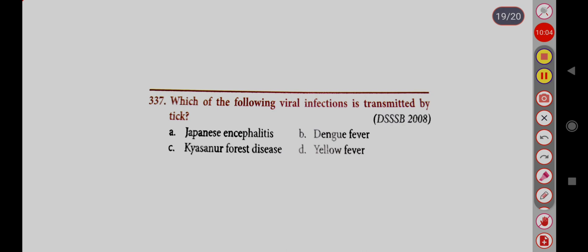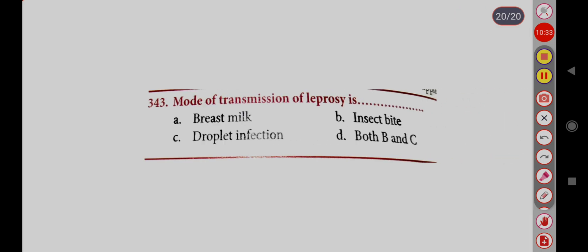Which of the following viral infections is transmitted by ticks? Option A, Japanese encephalitis; Option B, Dengue fever; Option C, Kyasanur Forest Disease; Option D, Yellow fever. Correct answer is Option C, Kyasanur Forest Disease. Mode of transmission of leprosy is: Option A, Breast milk; Option B, Insect bite; Option C, Droplet infection; Option D, Both B and C. Correct answer is Option D, Both B and C — insect bite and droplet infection. Thank you.